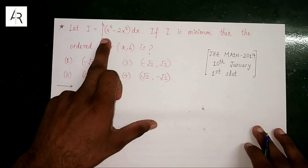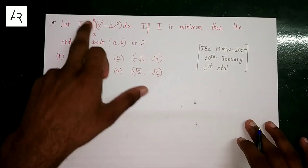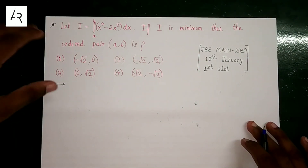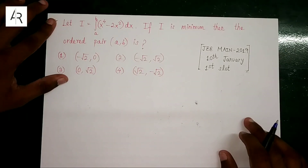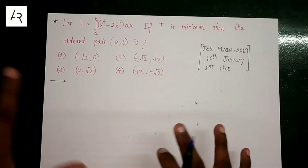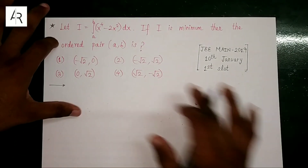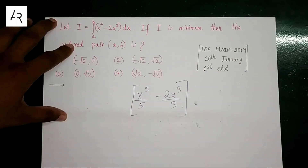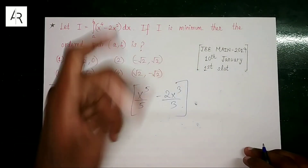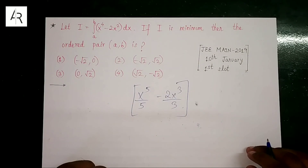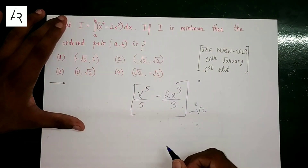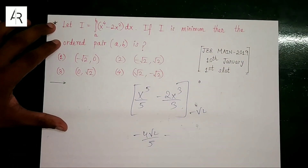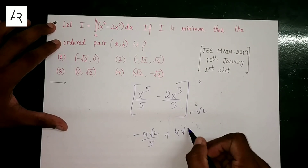Next question: I = definite integral from a to b of (x⁴ − 2x²) dx. If I is minimum, find the ordered pair (a, b). The actual way is to integrate and check the graph for negative regions. Integrating gives x⁵/5 − 2x³/3. Now check option (−√2, 0): the value is 4√2/5 − 4√2 by 3 (with sign handling from limits).